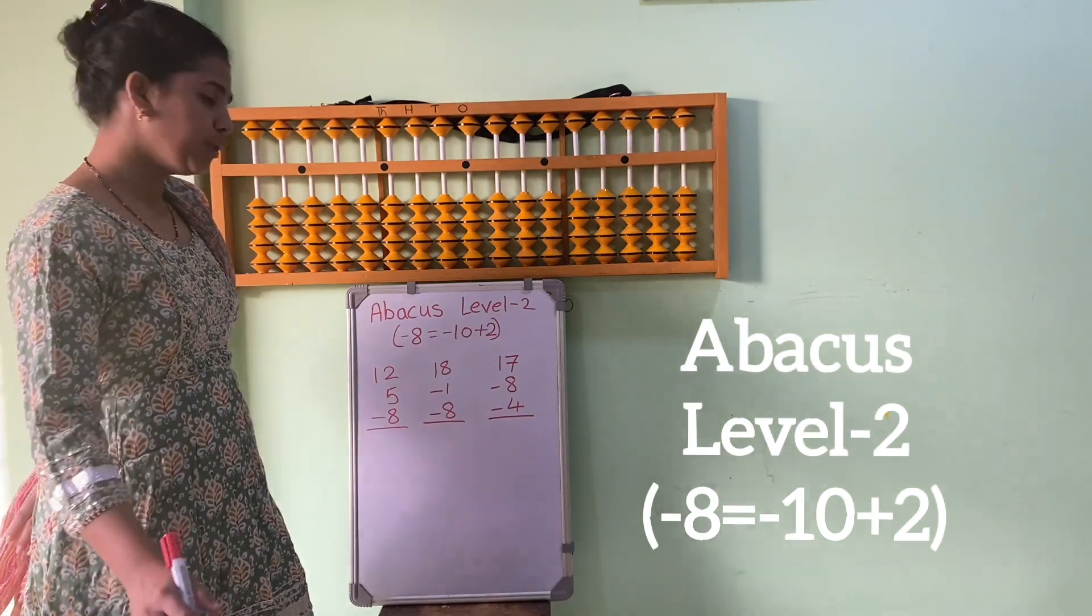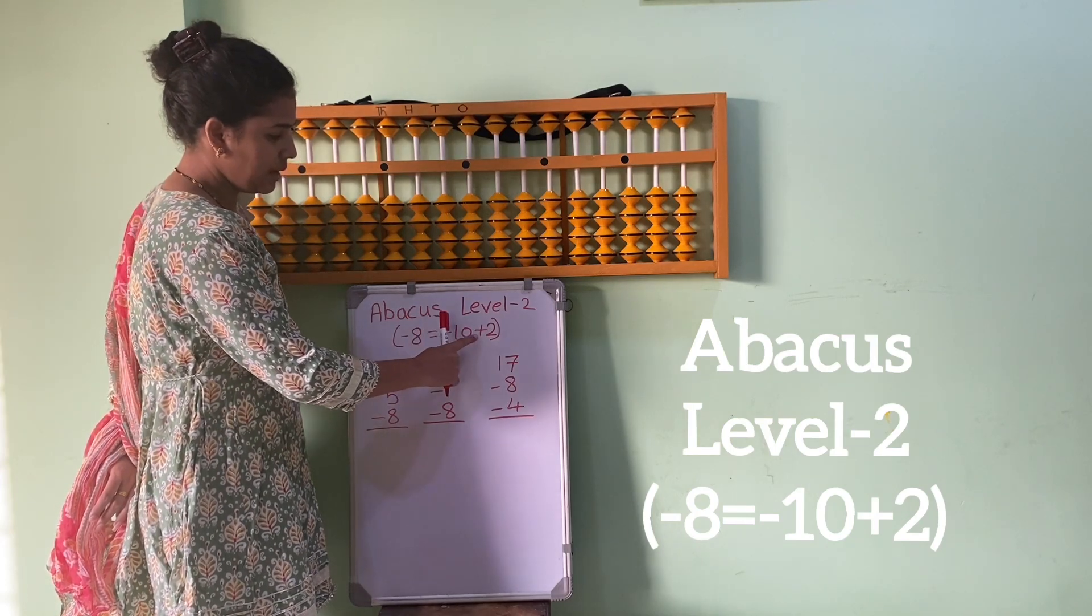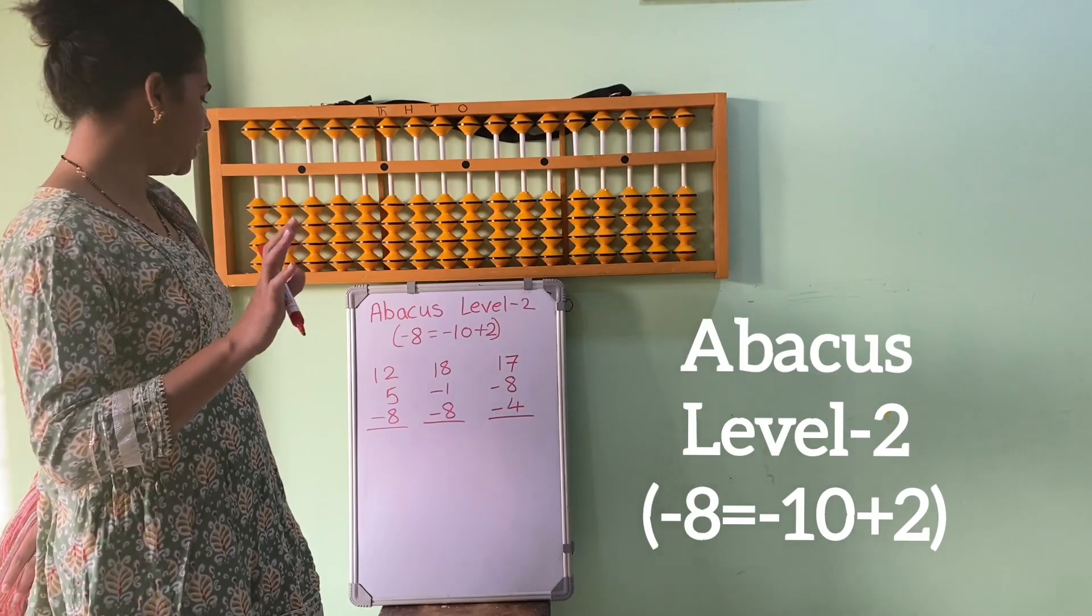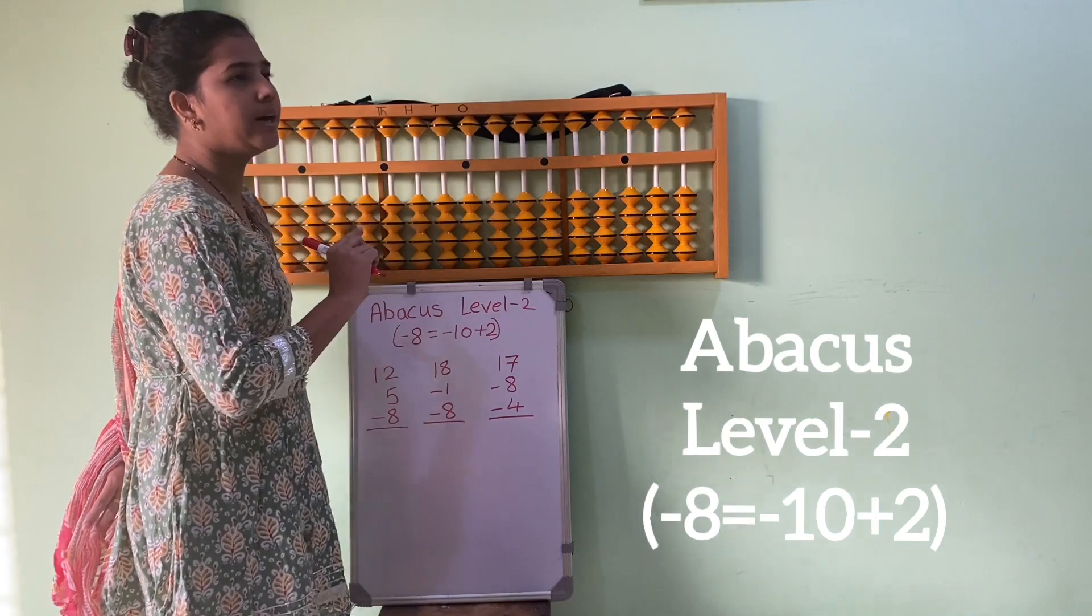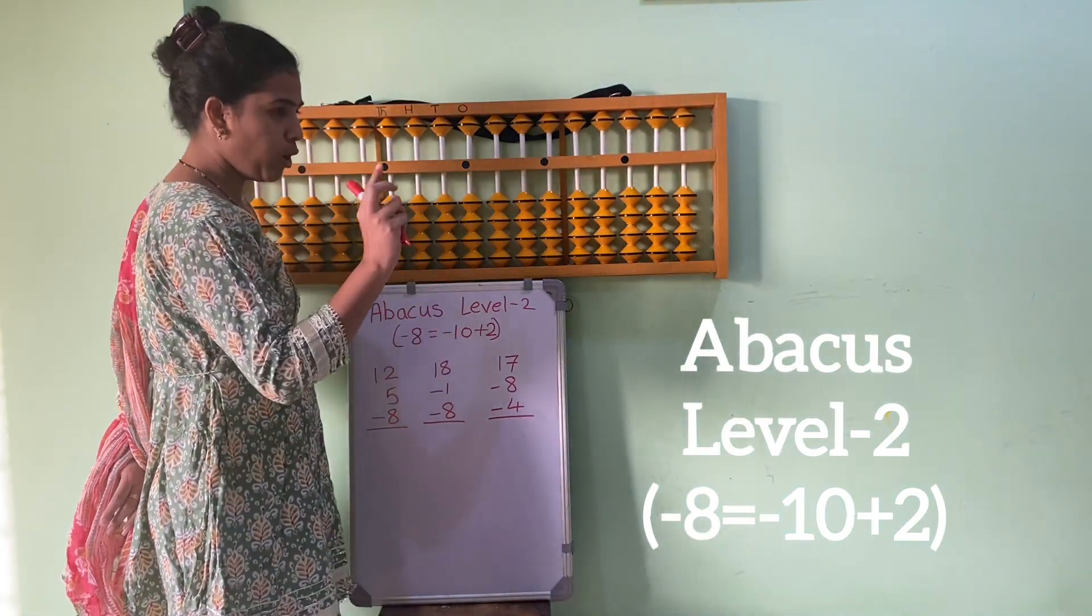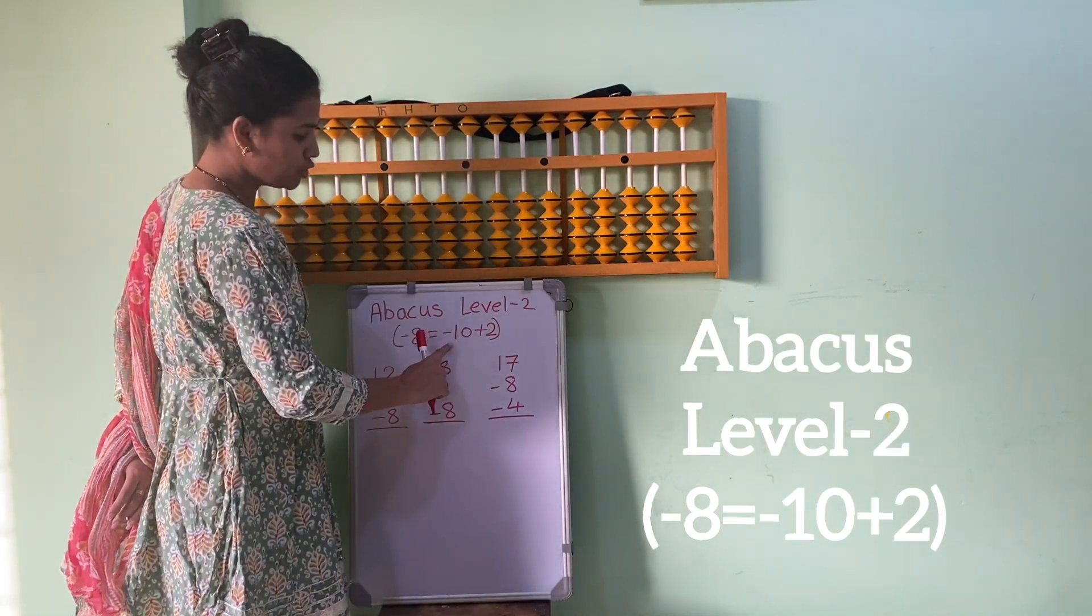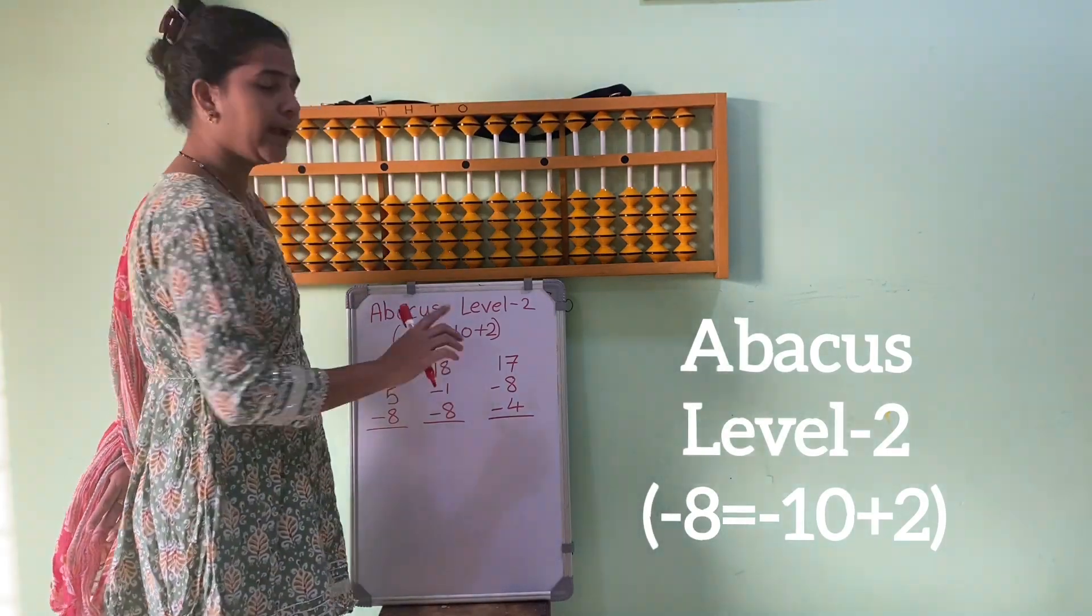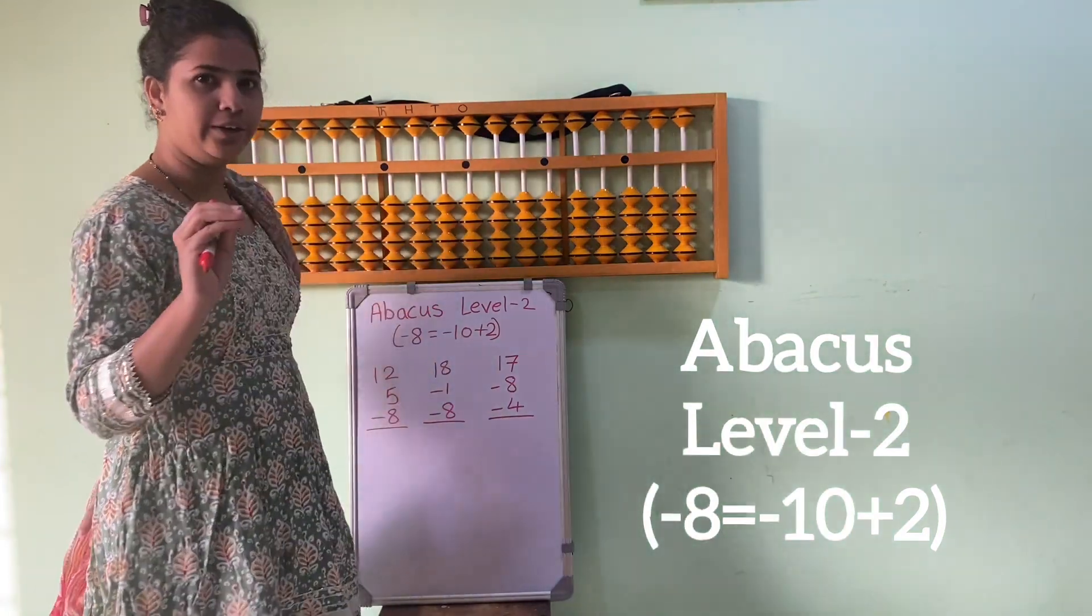We are going to use this formula: minus 8 equals minus 10 plus 2. If you have noticed this formula, if you have minus 1, first it will be minus 2. So the boss, like 5 or 10, it will be minus and then it becomes plus. So the formula is a little bit difficult.